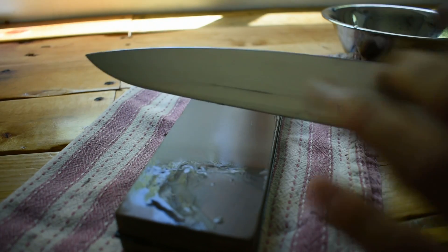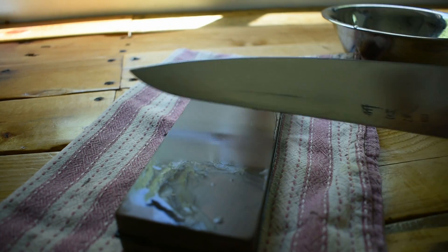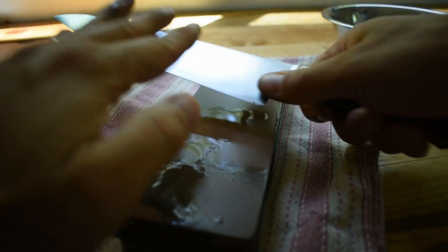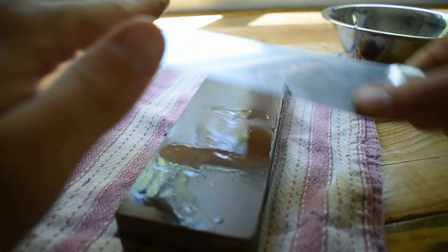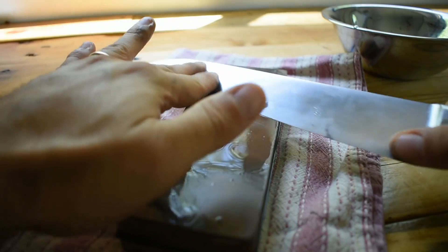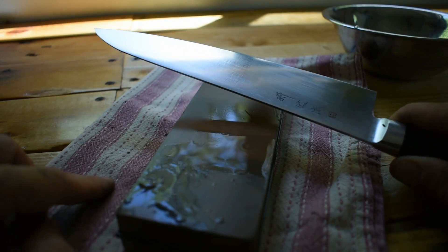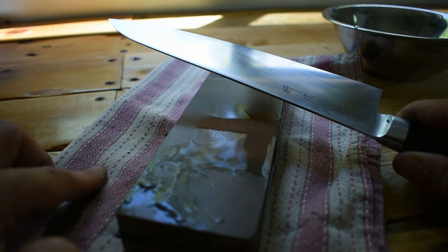Now we got to lightly take off the burr on this side. So just a little more, not so much like I did in the first time, but just a gentle take the burr off. And now we are done with this side of our sharpening stone.